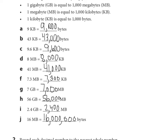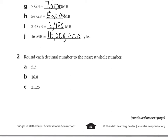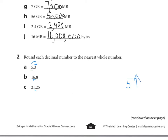Continuing on to number two: round each decimal number to the nearest whole number. When we're rounding decimal numbers to the nearest whole, we want to round to just the ones place. We're going to look to the right of the number to the tenths place. We know that if it's five or more, it goes up; four or less, the number stays the same. So, when I look to the right of five, I see three — that's four or less, so the five stays the same. The answer to round to the nearest whole number is five.